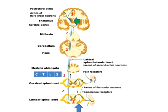The second order neuron crosses over to the opposite side, as seen at the bottom of the slide, and lies in the lateral white column. It then keeps ascending through the spinal cord within the lateral white column.